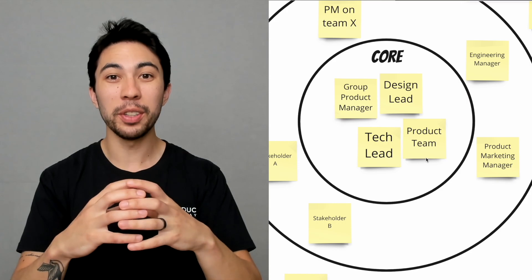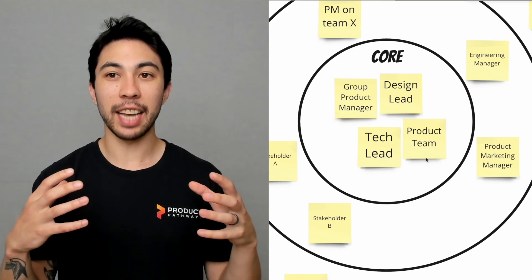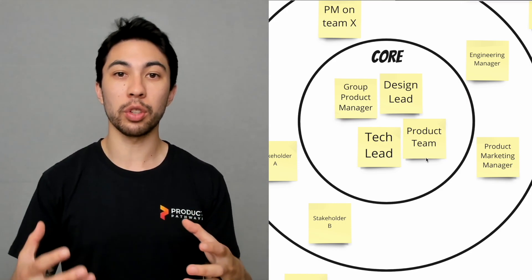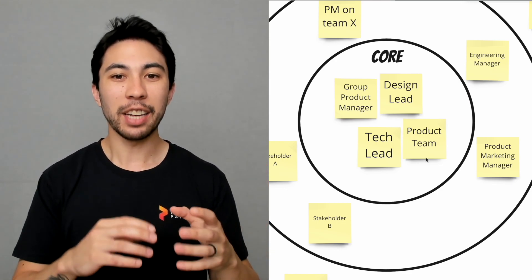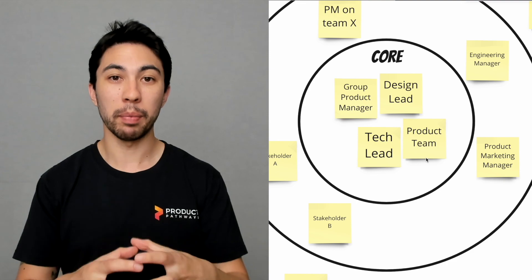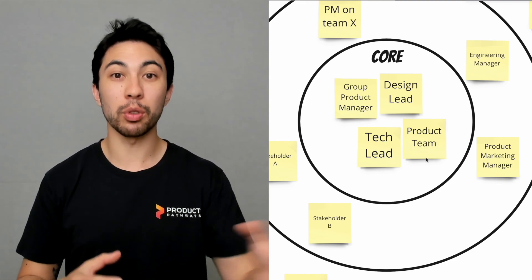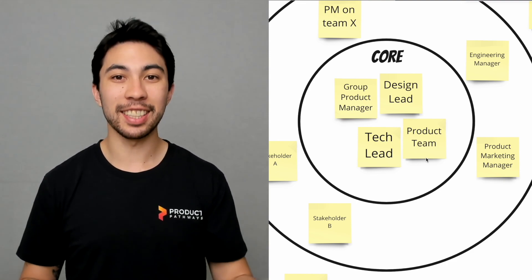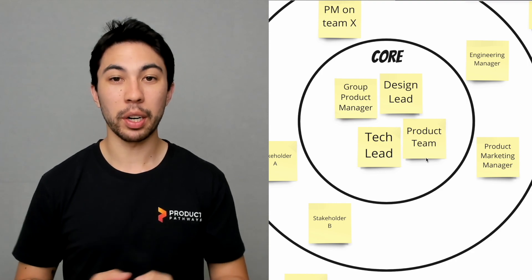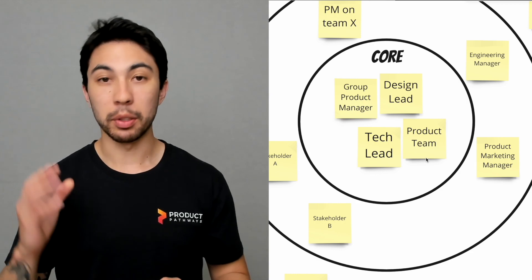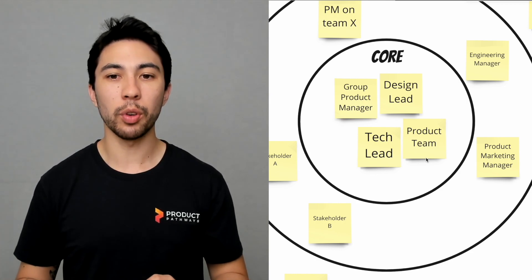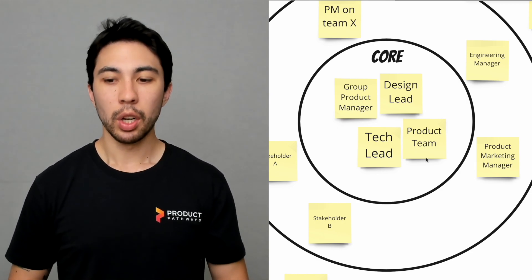You really shouldn't have a lot of people in core. It's one of the reasons why it's the middle circle, and I also like to see it as a restriction or a physical restriction on space—you should only be able to fit so many names in there. In this example, we have your direct manager, the design lead and the tech lead on the product, and then the team itself. You could have people like the GM of the business unit that you work for.